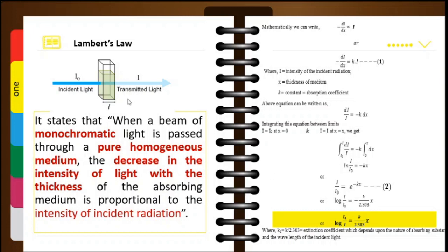If we have some homogeneous substance and when we pass a light of intensity I₀ — intensity refers to the number of photons per second — so when it is transmitted through the homogeneous pure medium, which may be a solid, you can imagine as if you have a colored glass and you are passing a light through it. The intensity of the transmitted light decreases.